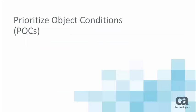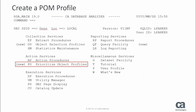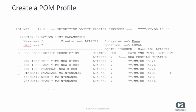To understand how the product uses the POCs and their values to prioritize your objects, we need to talk about Object Sets. To begin creating our POM profile, we type the letters PO in the command line and press Enter. The Prioritize Object Profile Services panel appears.